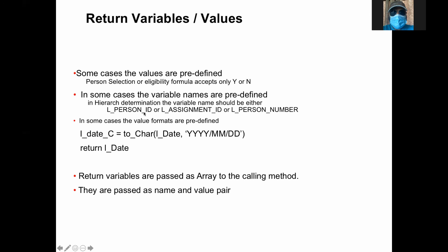In some cases, they also expect that the variable is prefixed. But in this case, hierarchy determination, it has to be either person ID or assignment ID or person number. These are the things. So by variable, they know what information is coming in. In some cases, especially when you are returning a date, the date is expected in YYYYMMDD format. The last two are more technical, it's better to understand but you don't need to know that.